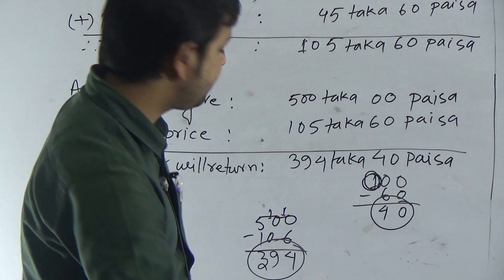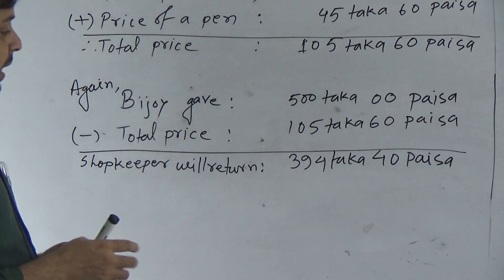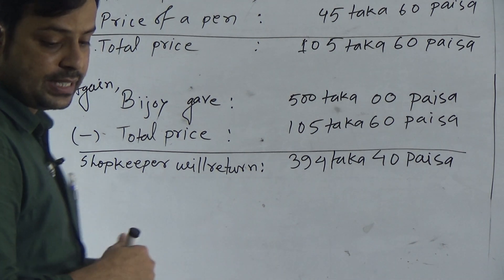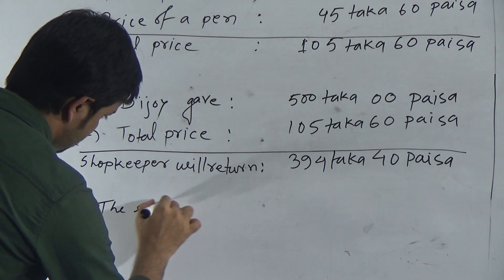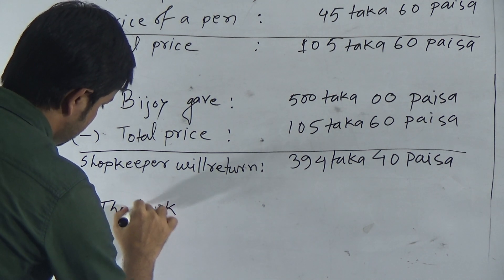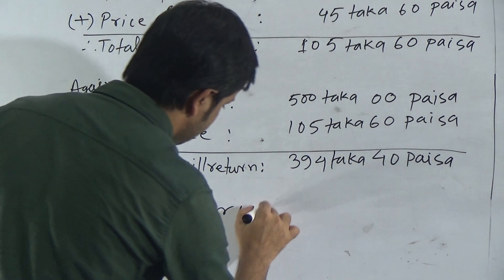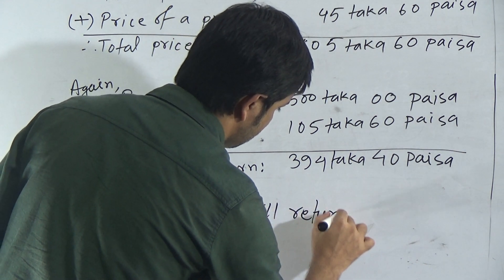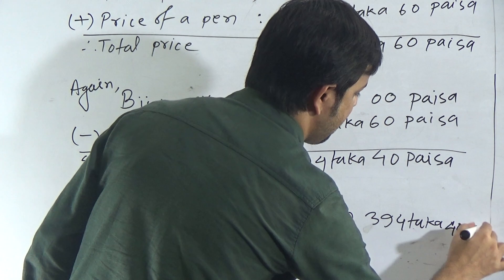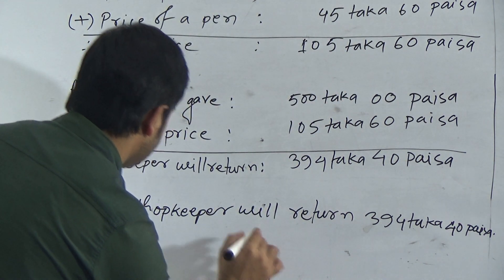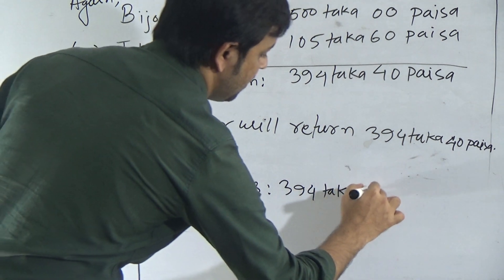So our required answer for this question: Therefore, the shopkeeper will return 394 taka 40 paisa. Our answer is 394 taka 40 paisa.